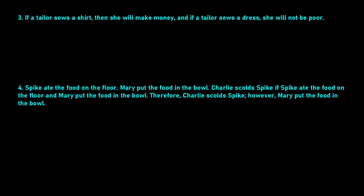Let's look at question three: If a tailor sews a shirt, then she will make money. And if a tailor sews a dress, she will not be poor. Our propositions are: a tailor sews a shirt — S for shirt; she will make money — M for money; a tailor sews a dress — D for dress; and she will be poor — P for poor. But we have a NOT here, so that's going to be a negation.